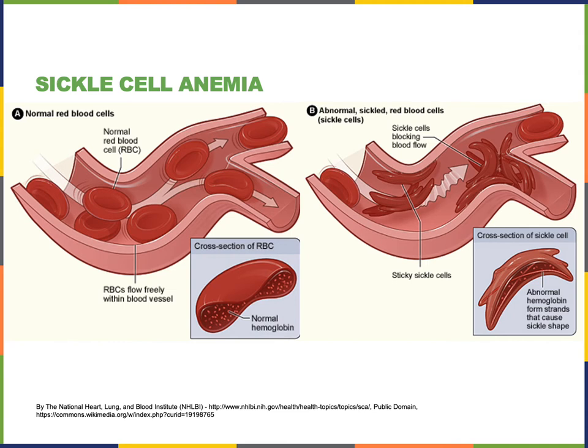A major theme in anatomy and physiology — which applies throughout biology — is the idea that structure determines function: anatomy determines physiology, and physiological mechanisms are dependent upon biological structures. A great example of the relationship between structure and function is sickle cell anemia. Anemia refers to a low oxygen-carrying capacity in the blood. If you have anemia you might feel tired because cells in your body cannot get enough oxygen to support their metabolism — the chemical reactions that fuel the work cells need to do.